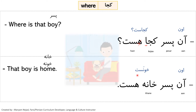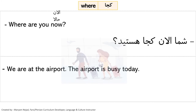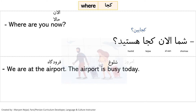Next: 'Where are you now?' — 'now' is 'al-an' or 'hala'. Formally: 'shoma al-an koja hastid'. In Persian the time adverb usually comes after the subject, though it can come before — it's just more common after. Informally, 'koja hastid' contracts to 'koja in', and we don't need to say 'shoma', so: 'al-an koja in'. The answer: 'We are at the airport and the airport is busy today' — 'furudga' (airport, literally 'place of landing'), 'shuluq' (busy), 'emruz' (today).